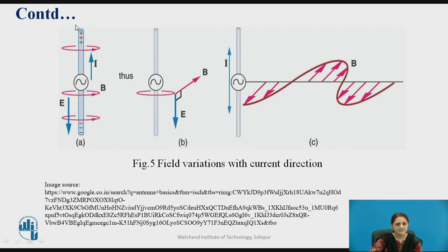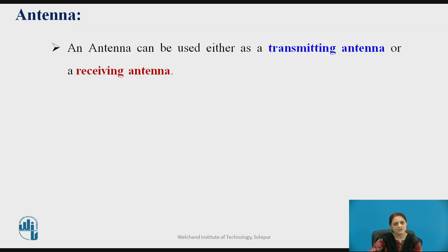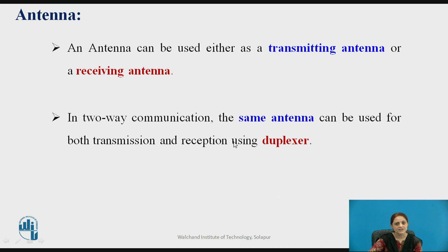These are the field variations with the current direction. When a current-carrying conductor is placed and electrons flow through it, the field variation occurs. When the flux linked to this conductor changes, current starts to flow. The direction of the electric field is from positive to negative and thus the current direction is in the upward direction. The field variation is considered with respect to the direction of the current. The antenna can be used either as a transmitting or receiving antenna, and is therefore also called a duplexer.